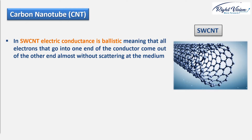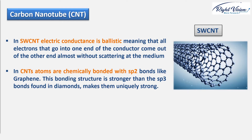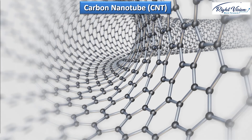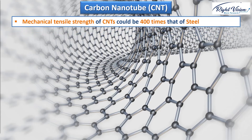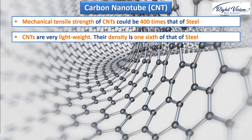Regarding chemical bonding, like graphene, carbon nanotube atoms are chemically bonded with sp2 bonds — an extremely strong form of molecular interaction. This bonding structure is even stronger than the sp3 bonds found in diamond, making carbon nanotubes uniquely strong. In fact, the mechanical tensile strength of carbon nanotubes is about 400 times stronger than steel, yet they are very lightweight — their density is one-sixth that of steel.